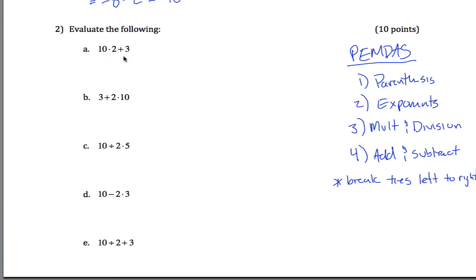This first one, 10 times 2 plus 3. What you need to know is multiplication comes before addition. So I do 10 times 2 to get 20 before I add 3. 20 plus 3 is 23.